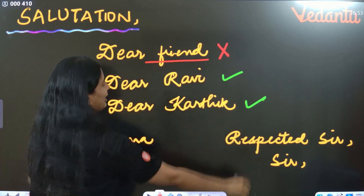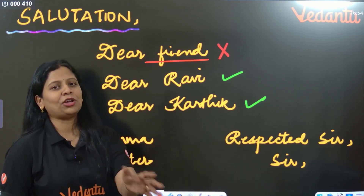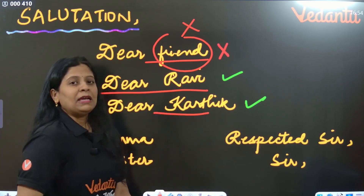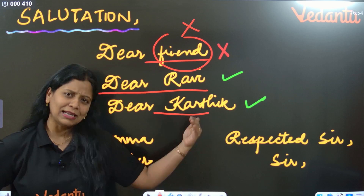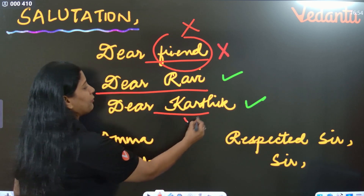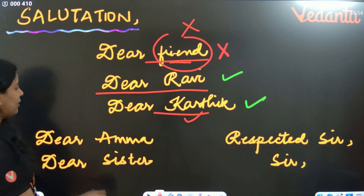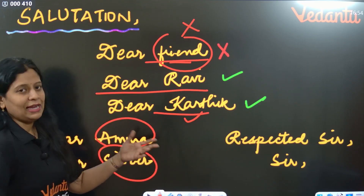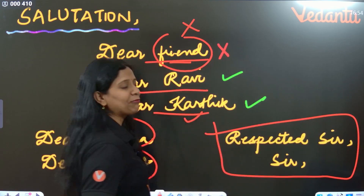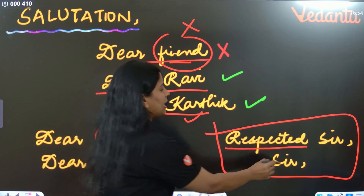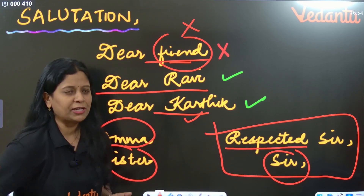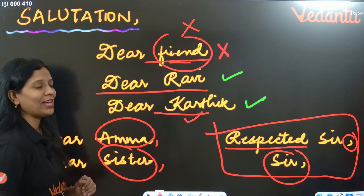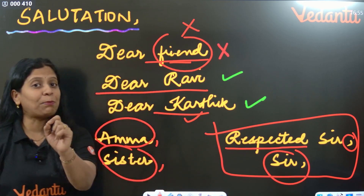For salutation — suppose you are writing a letter to your friend Ravi. You have to write 'Dear Ravi.' Don't write 'Dear Friend.' If the question gives a friend's name, use that name. If no name is given, use some imaginary name — but don't write 'dear friend.' If you are writing to your mother or sister, write 'Dear Sister,' 'Dearest Brother,' 'Dearest Grandma,' like that. In formal letters, use 'Respected Sir' or simply 'Sir' or 'Ma'am.' After the salutation, a comma should be there — comma after salutation is one of the important punctuation rules.